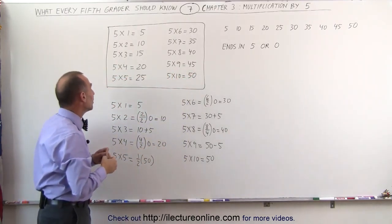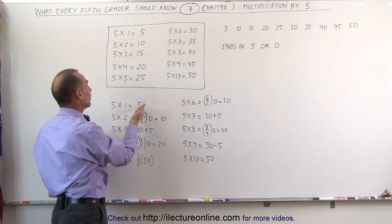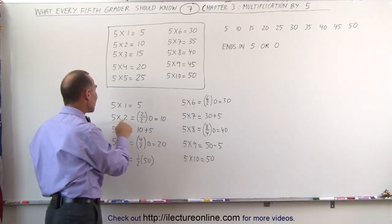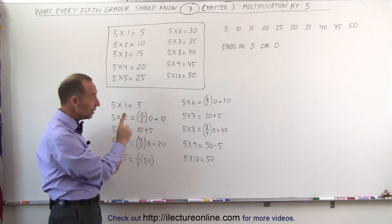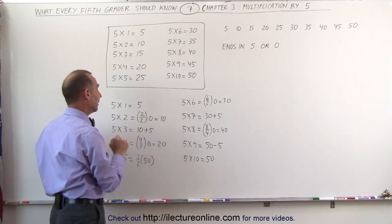Another way of looking at it would be to say, well, 5 times 1 is easy, that's simply 5. But 5 times 2, take the number 2 divided by 2, you get 1, and add a 0, you get 10.